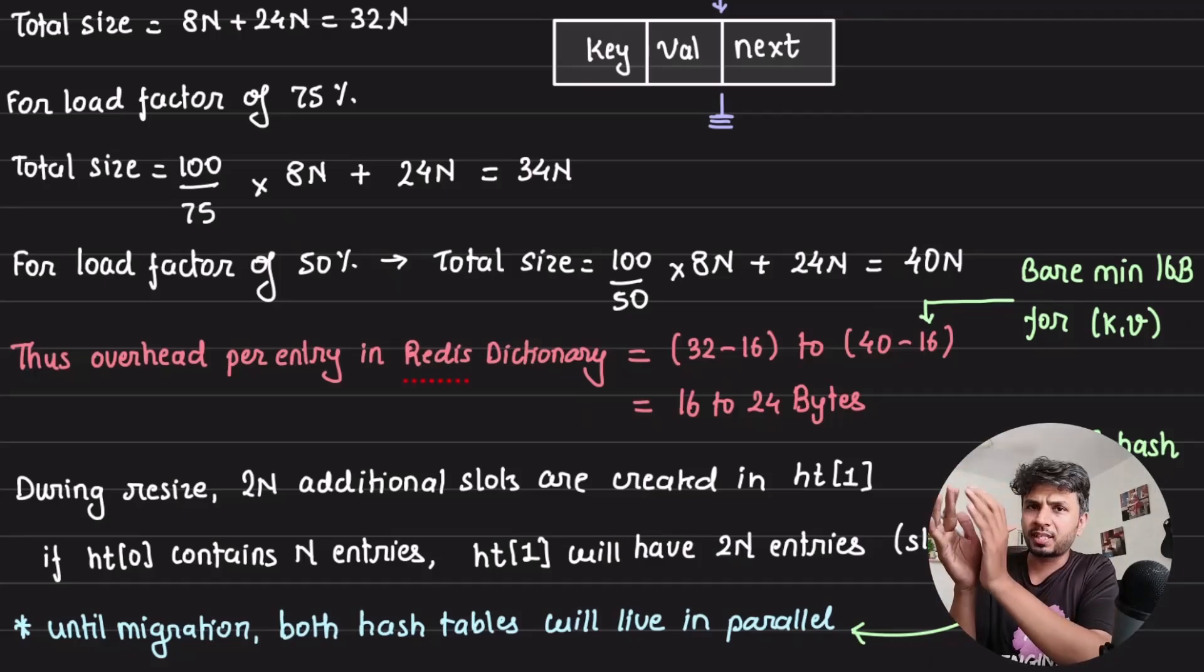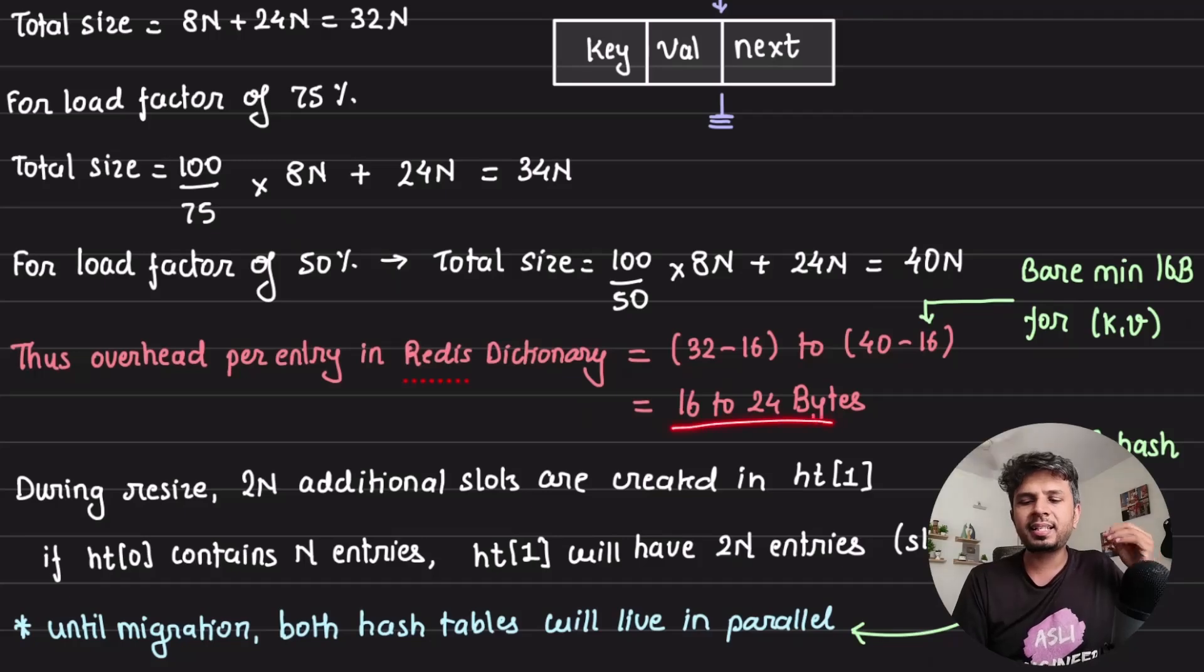Key and value, key pointer, value pointer, both constitute 16, like 8 + 8 = 16. So the overhead is 16 to 24 bytes. That is the data structure overhead.